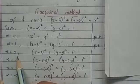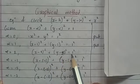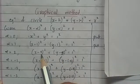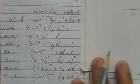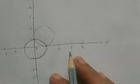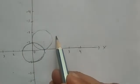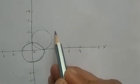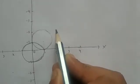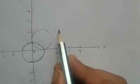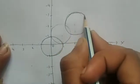For α = 2, we get (x−2)² + (y−2)² = 1: center (2, 2), radius 1. Drawing the graph gives a circle of radius 1 unit centered at (2, 2).